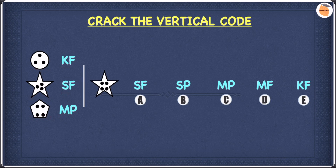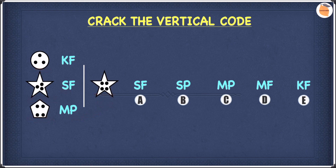The first shape is a circle, the second shape is a star, and the third shape is a pentagon. The shape on the right is a star, so this means it must start with an S and we can write it down. As a result we can cross off C, D and E because they don't start with an S, so we are now left with A and B.